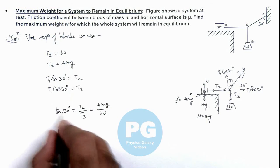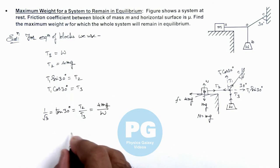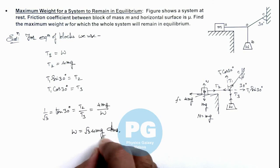And the value of tan 30 degrees is 1 by root 3. So on simplifying, the value of w we are getting is root 3 mu mg. That would be the final result of the problem.